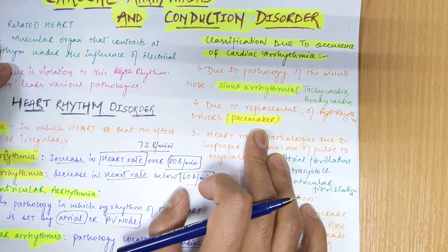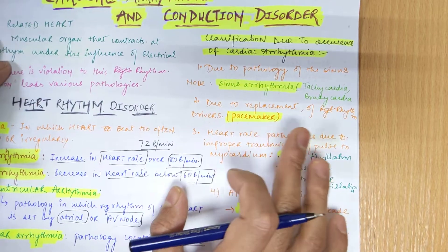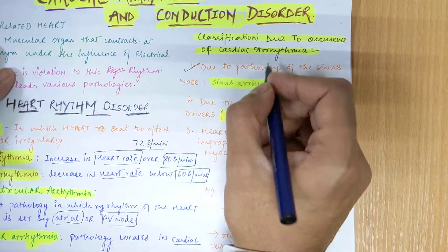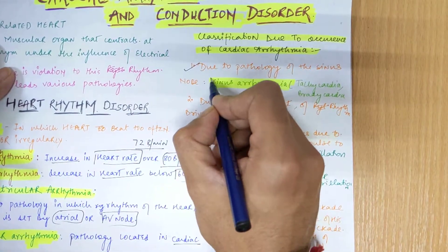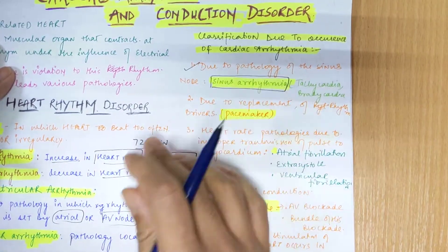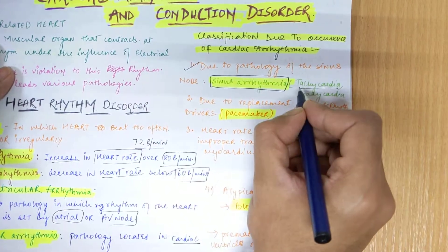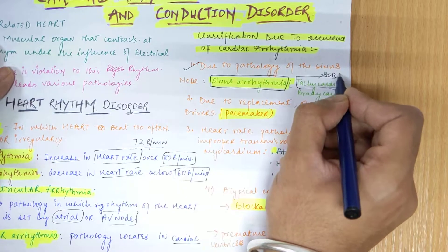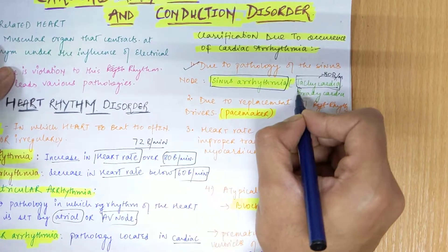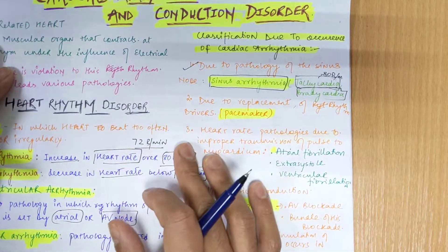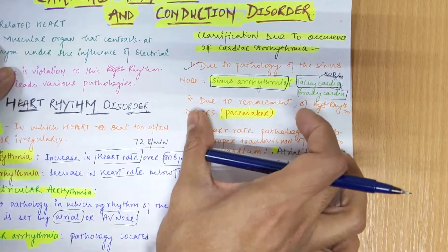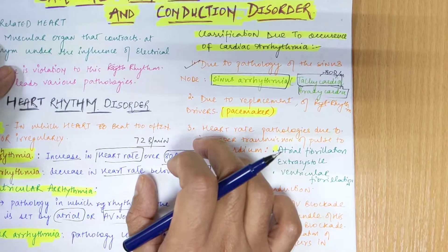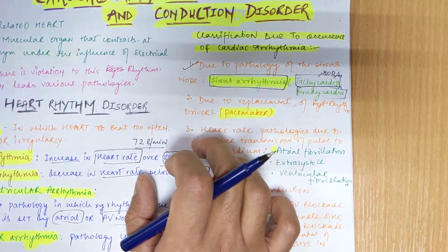Now let's move on to the classification due to occurrence of cardiac arrhythmias. The first case is due to pathology of the sinus node — the SA node — in which we have sinus arrhythmias. This includes two pathologies: tachycardia, where heart rate is above 80 beats per minute, and bradycardia, where it is below 60 beats per minute.